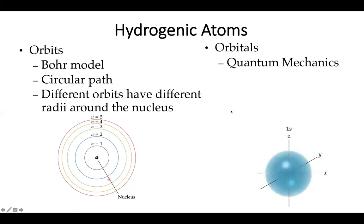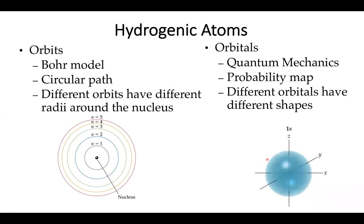However, when we go to orbitals, we're invoking quantum mechanics. These have a three-dimensional probability map. The electron exists everywhere in space, but we typically represent it using a shaded area showing where we have a 95% probability of finding the electron. Different orbitals have different shapes.